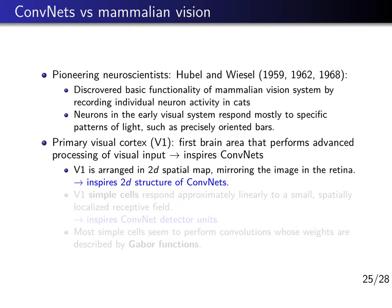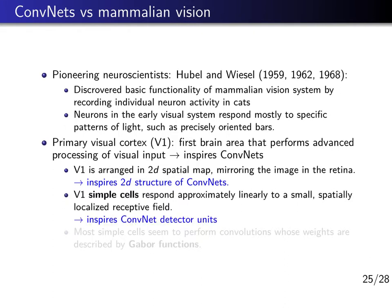V1 is arranged in a two-dimensional spatial map which mirrors the image in the retina of the eye, inspiring the 2D structures of convolutional neural networks. There are so-called simple cells — specific brain cells in V1 which respond approximately linearly to a small, spatially localized receptive field — for example, particular features or patterns in the image, and this inspires the convolutional neural network detector units.